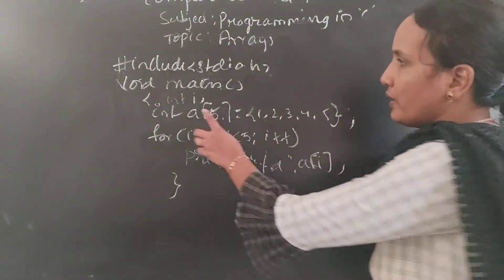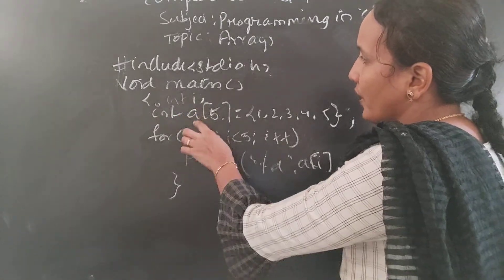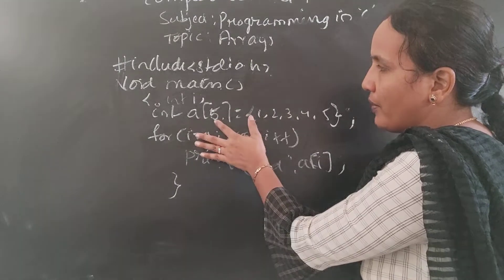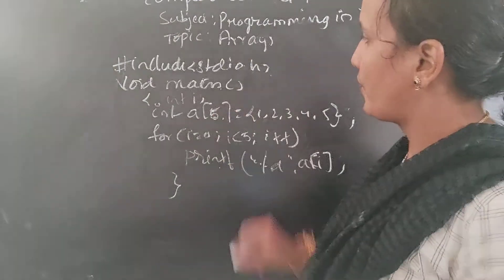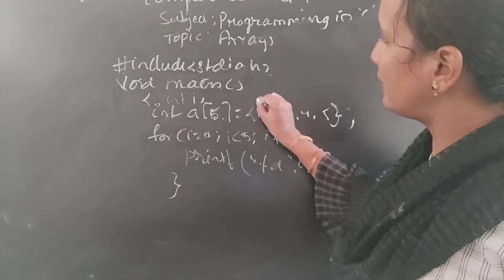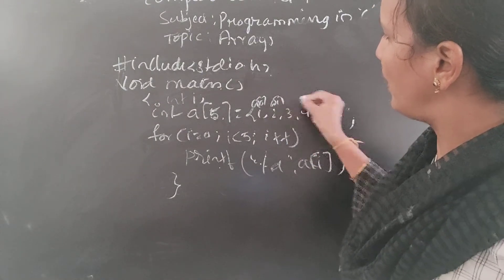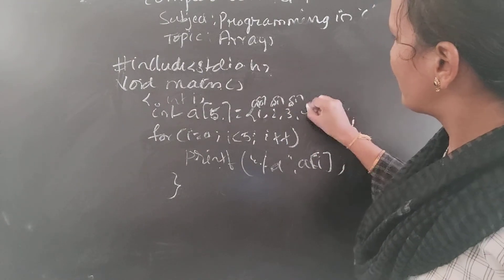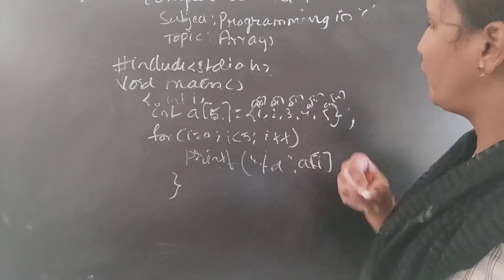Here i is the counter variable. A of i means the name of the array and the index of i elements: 1, 2, 3, 4, 5. The index starts at 0, then 1, 2, 3, and 4 — so A of 0, A of 1, A of 2, A of 3, A of 4.